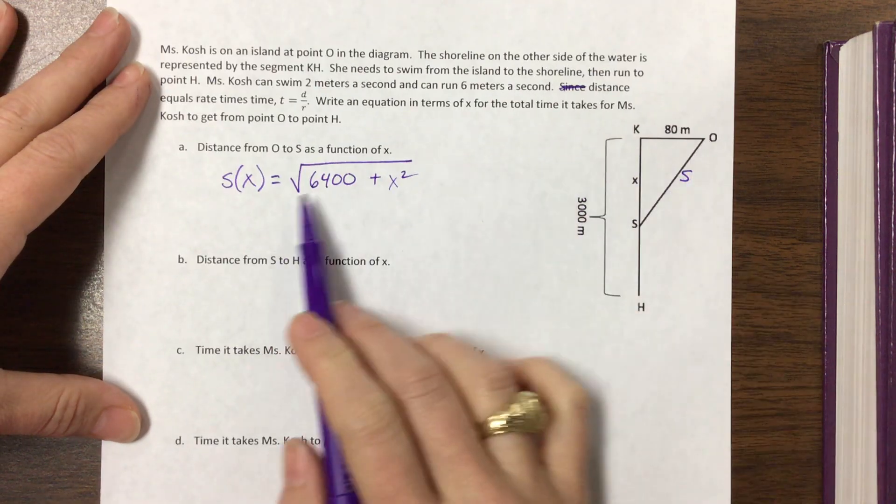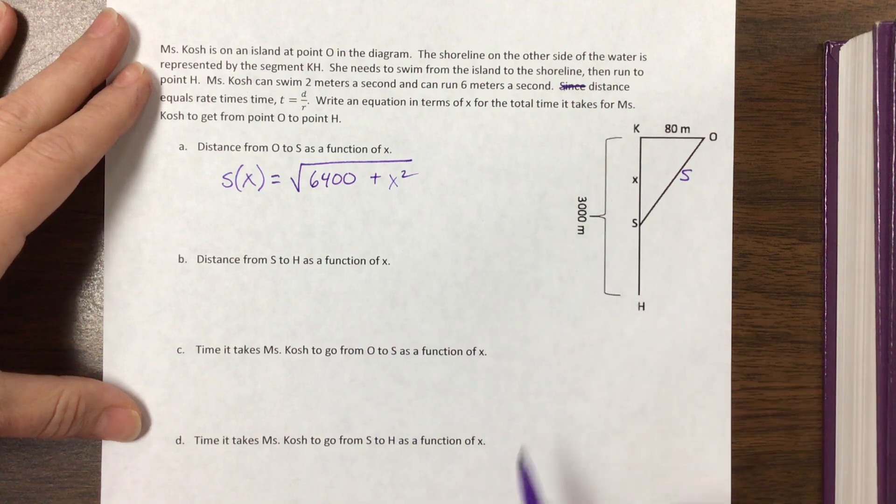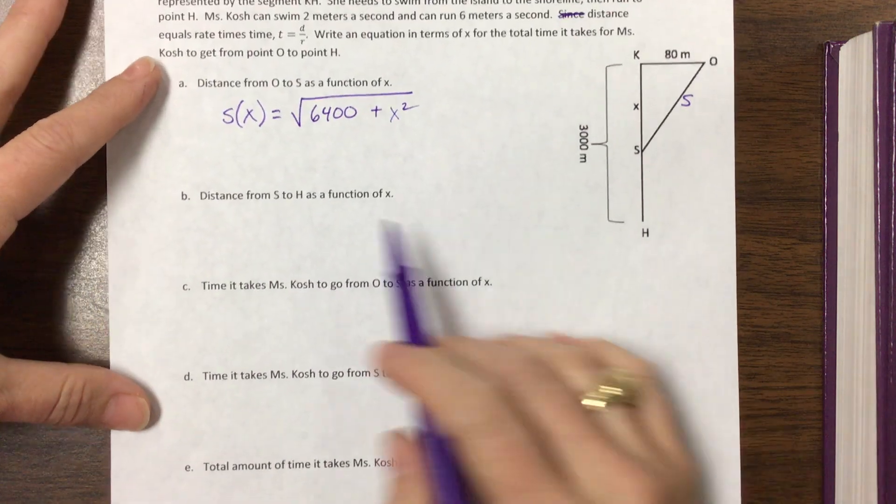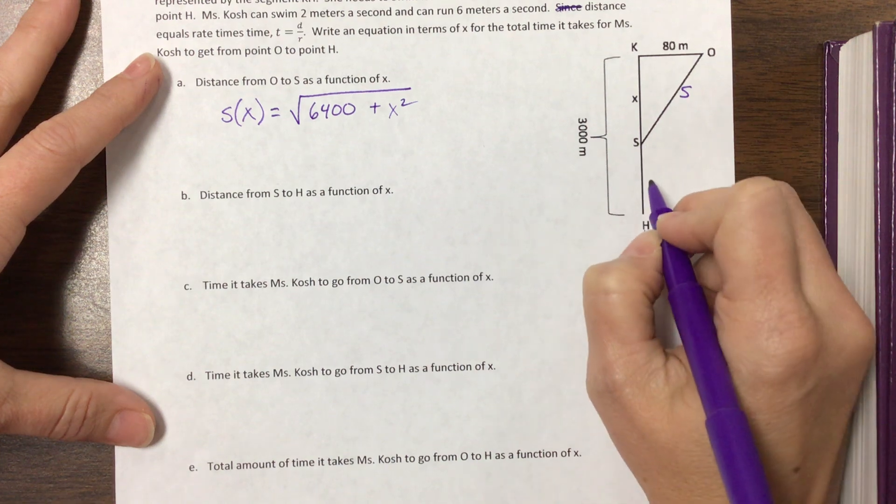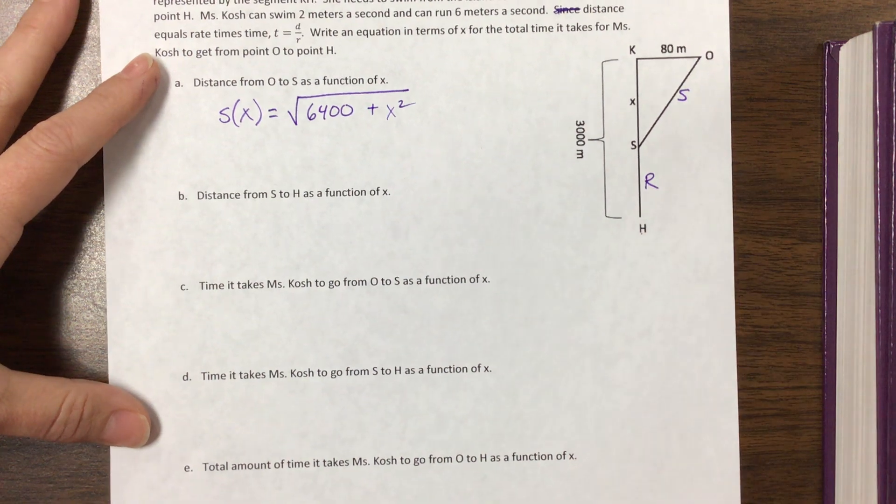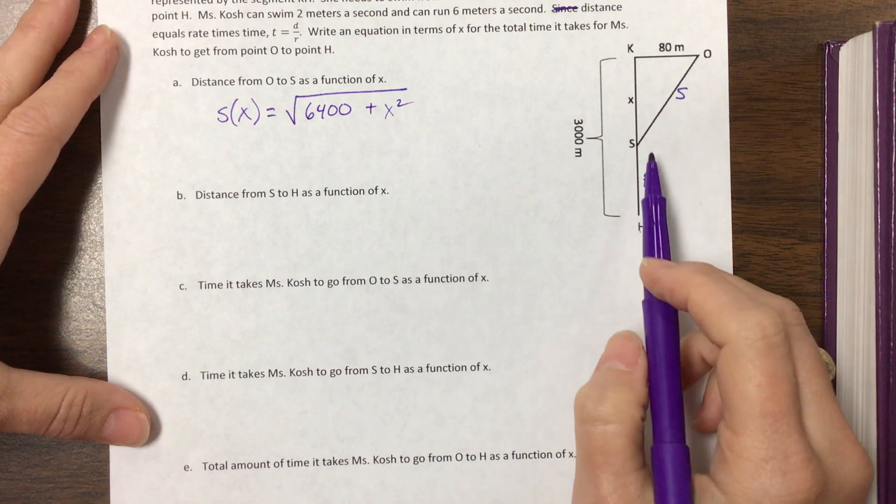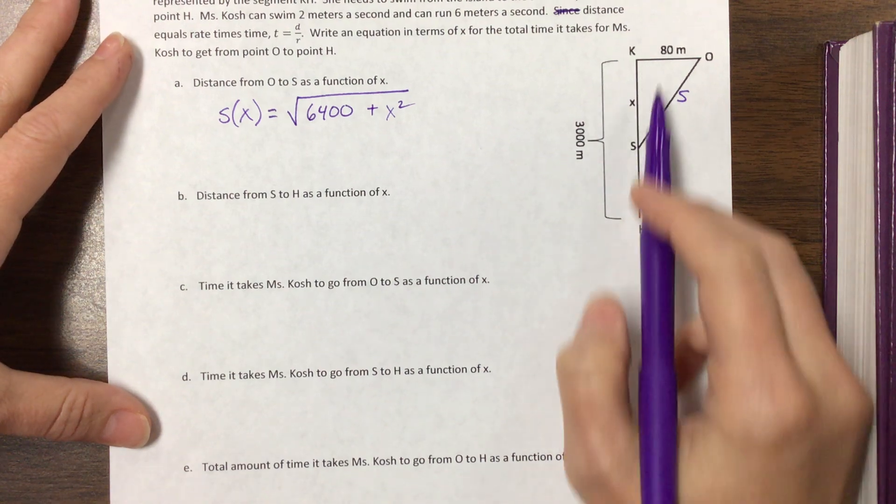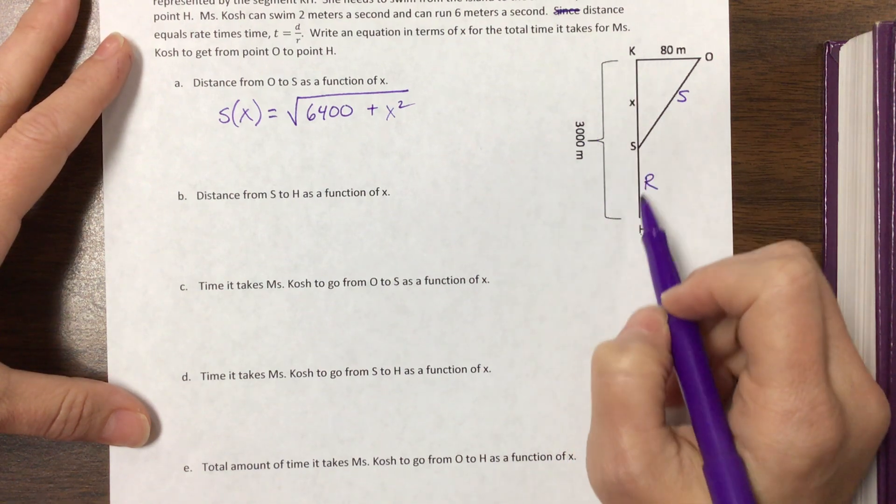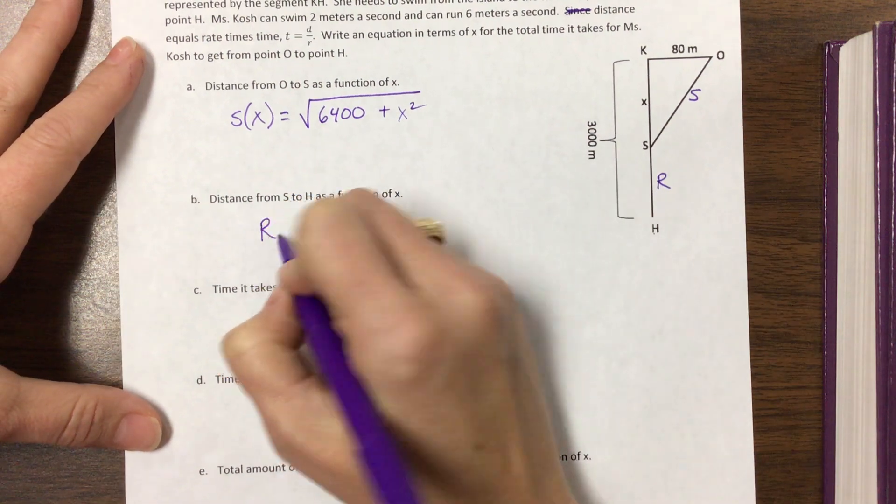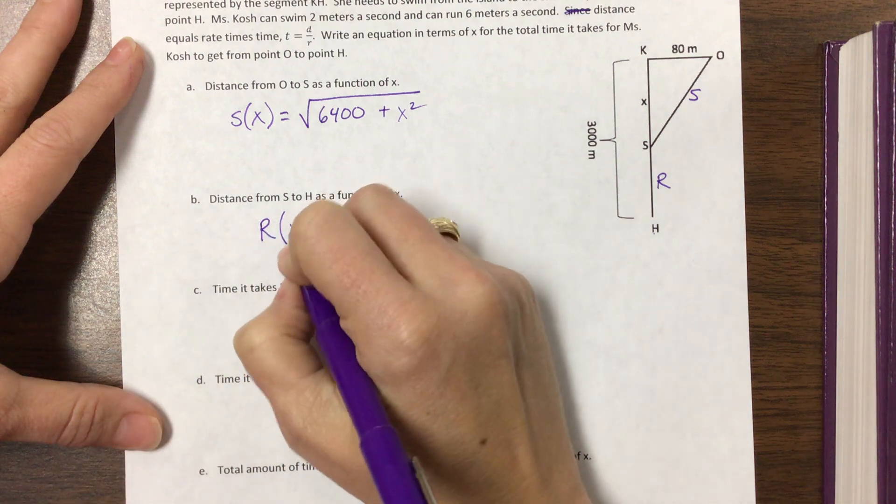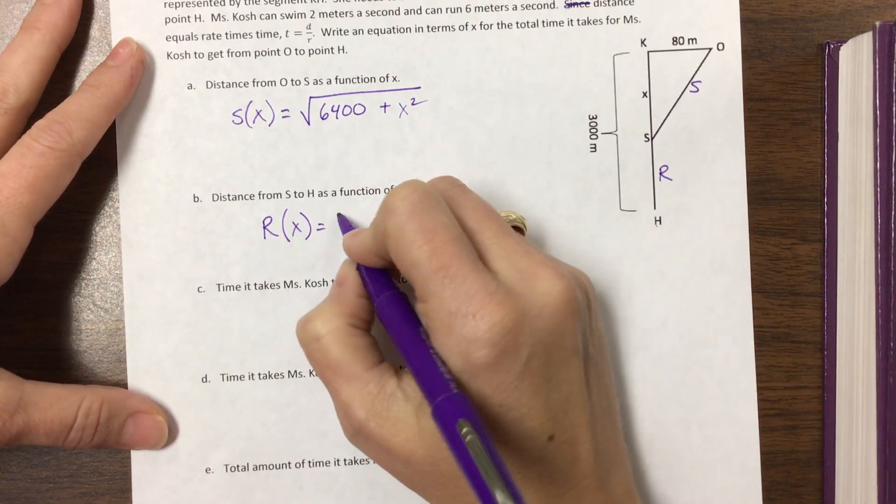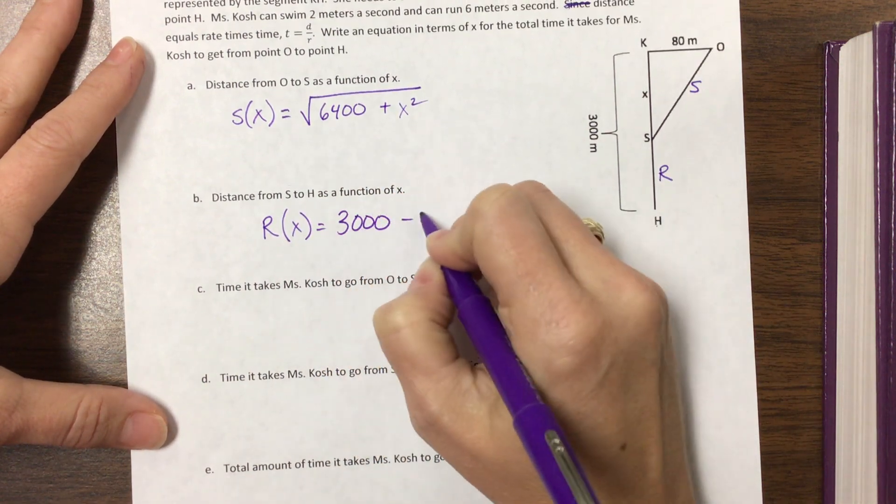And so there's that first part down. So I've swam, I'm gonna swim this depending on how big this X value is here. Okay so then the other part is from S to H and let's call this R for running. And that is just going to be, well the whole thing is 3,000 meters so R as a function of X is equal to 3,000 minus X.